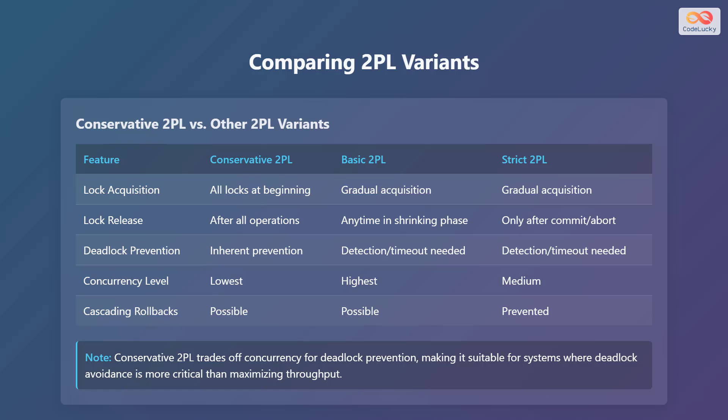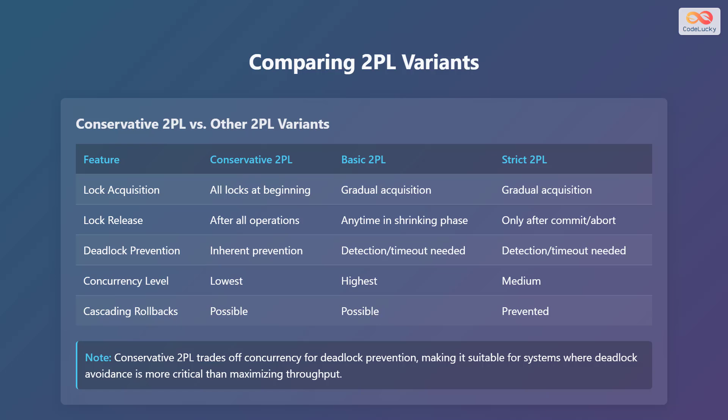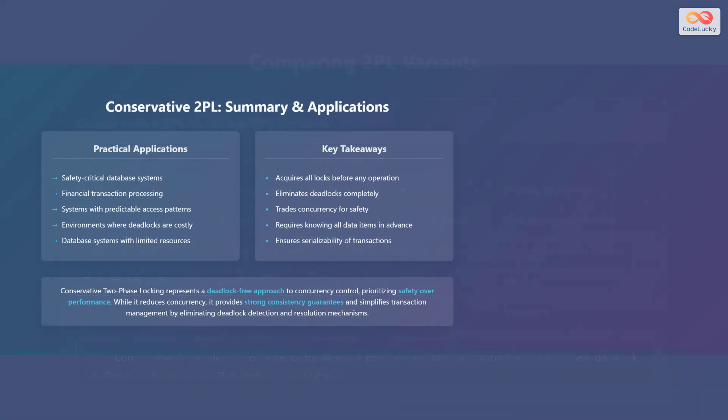Note that conservative two-phase locking trades off concurrency for deadlock prevention, making it suitable for systems where deadlock avoidance is more critical than maximizing throughput. Conservative two-phase locking has practical applications in safety-critical database systems, financial transaction processing, systems with predictable access patterns, environments where deadlocks are costly, and database systems with limited resources.